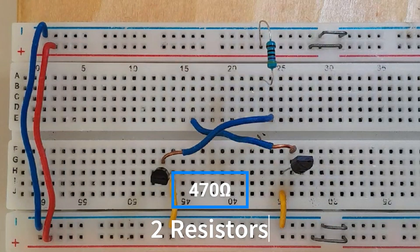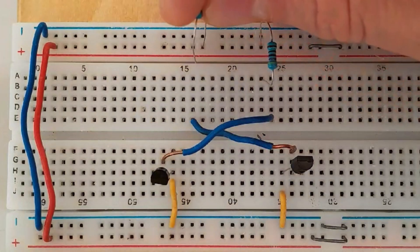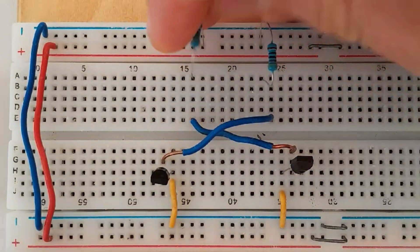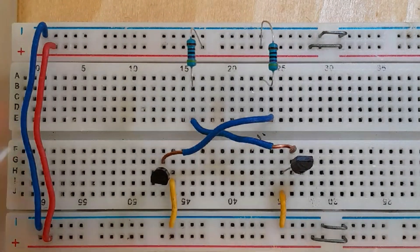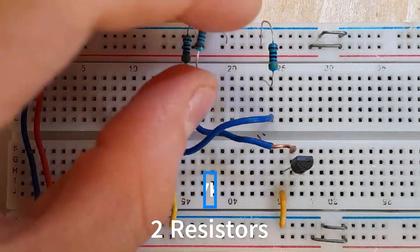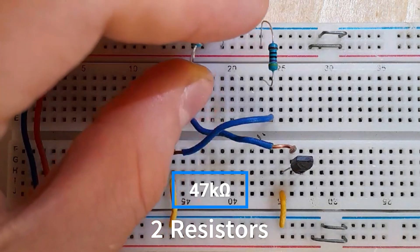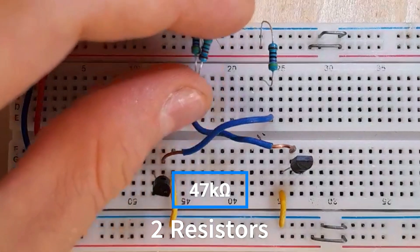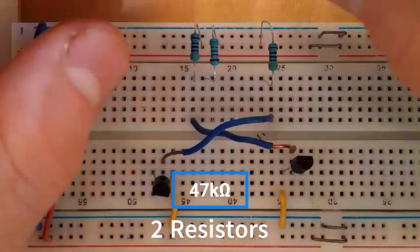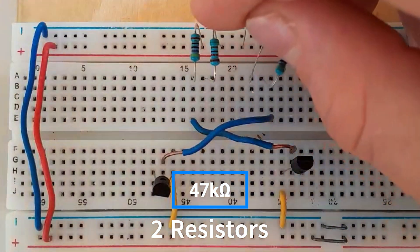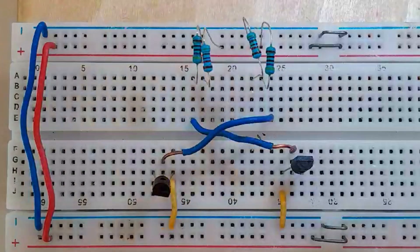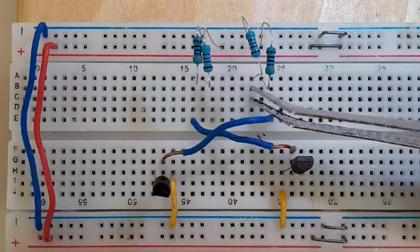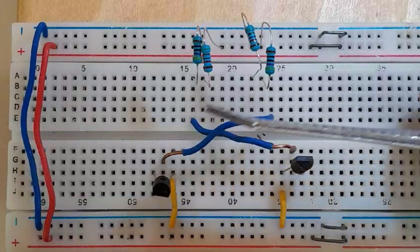Then you're going to connect the 47 kilo-ohm resistors like this, also to the positive rails. Repeat that two more times like this, and then you're having these two pins next to each other and these two also next to each other.